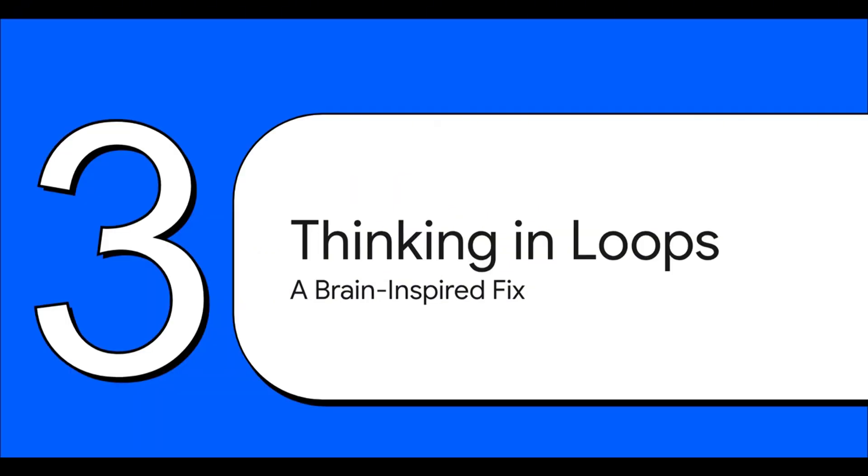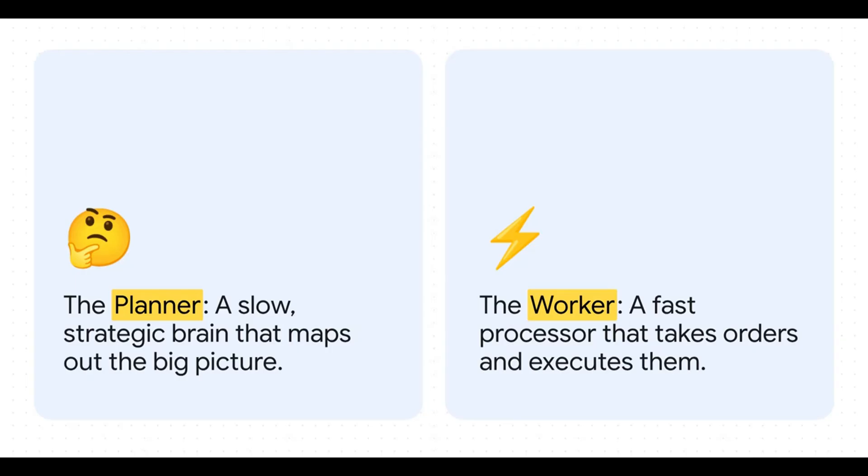So what does HRM do? Well, it just throws that whole fragile chain right out the window. Instead, it uses a completely different brain-inspired architecture that lets it think in loops, not in straight unforgiving lines. It does this by splitting its thinking into two distinct parts. It's pretty genius.